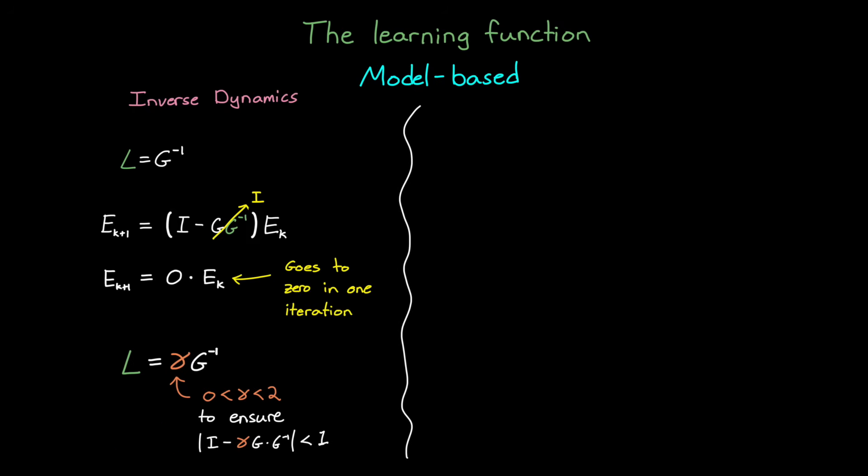All right, so inverting the dynamics is the first model-based method, but there's another popular model-based approach that's based on gradient descent. And here's how it works. We can create a cost function j, that's a function of the error squared, and then the error is just a function of the input u.